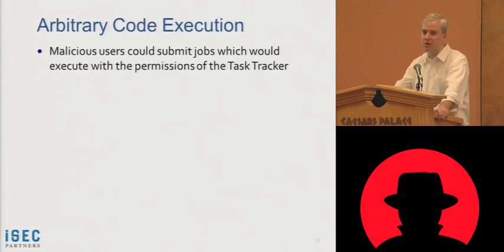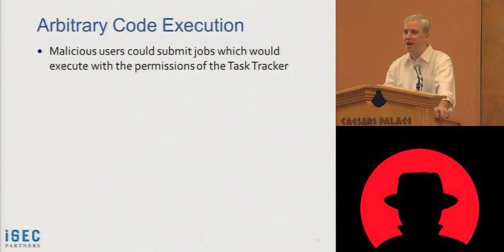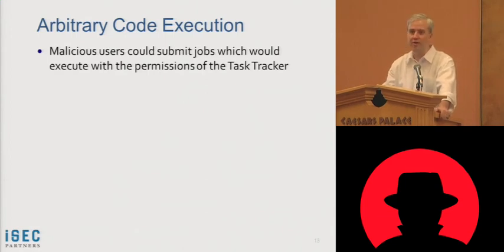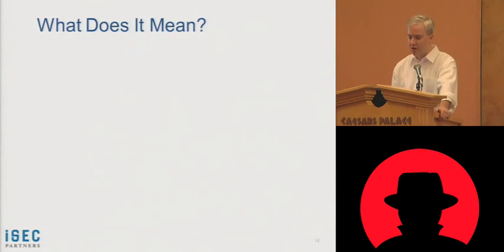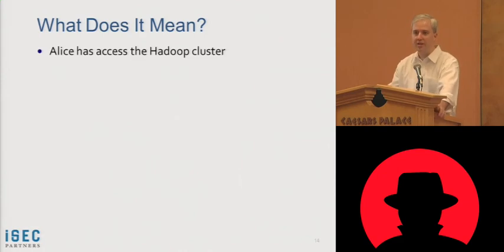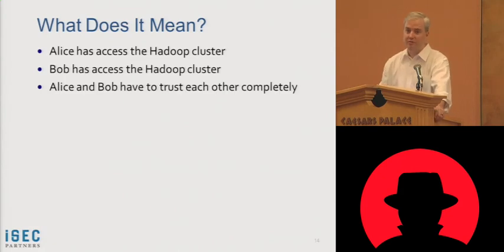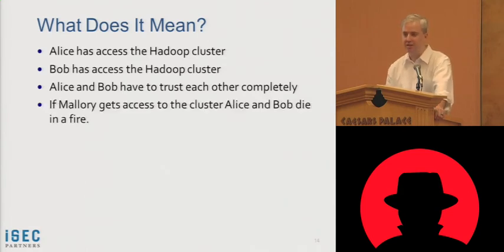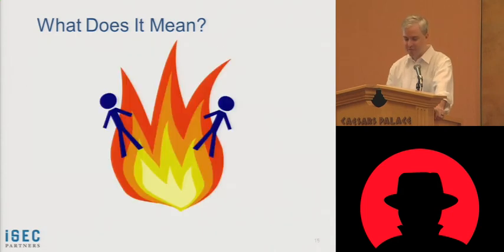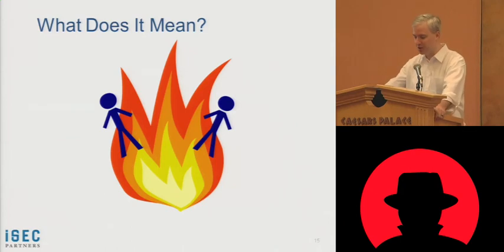Arbitrary code execution: because there was not sufficient authentication or authorization, pretty much anyone could submit code to a job tracker, which would then be executed with the level of permissions of that job tracker — generally a fairly privileged user on that physical host. This is the legacy that Hadoop has. So let's say Alice and Bob both have access to a Hadoop cluster — they have to trust each other completely because either one can impersonate the other. But if Mallory gets access to the cluster, Bob and Alice both lose completely. There is no security in place.